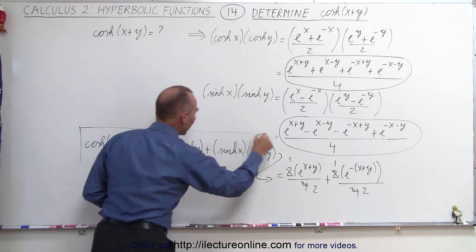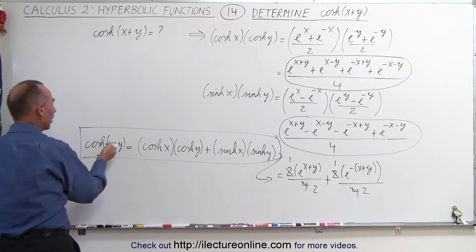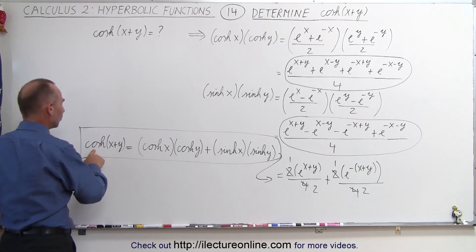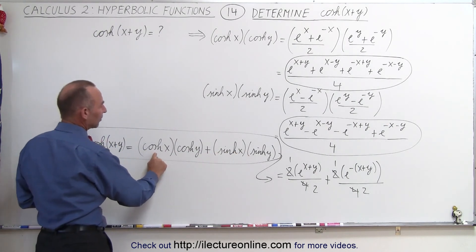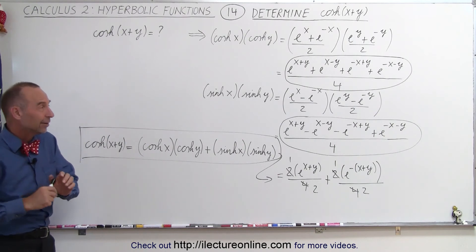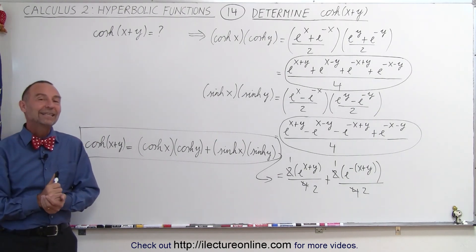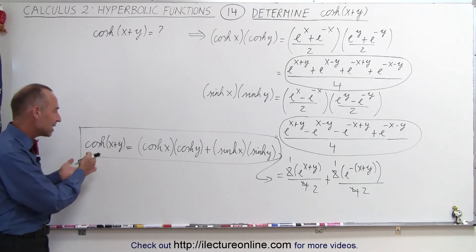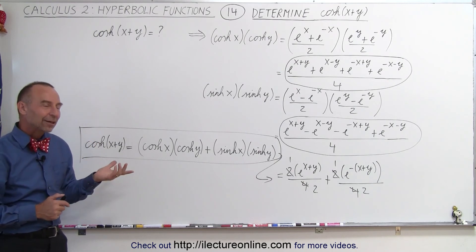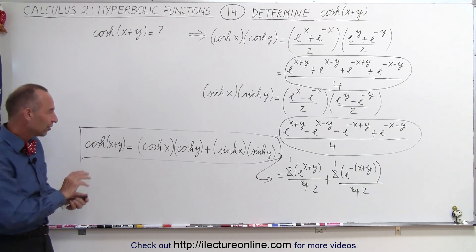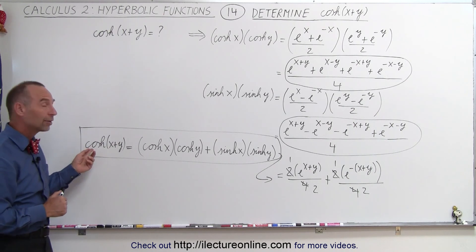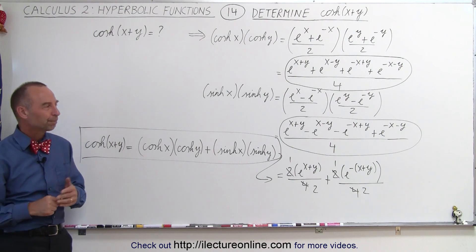So this means that if we take the hyperbolic cosine of the sum of two variables — and these aren't really angles, these are areas — the hyperbolic cosine of x plus y can be written as the hyperbolic cosine of x times the hyperbolic cosine of y, plus the hyperbolic sine of x times the hyperbolic sine of y. We kind of got there through the back door, but it works. Notice this is a little bit different from the trigonometric equivalent — for hyperbolic functions it's reversed compared to trigonometric functions. On the next video, we'll do the hyperbolic sine of x plus y, and you'll see a similar result.